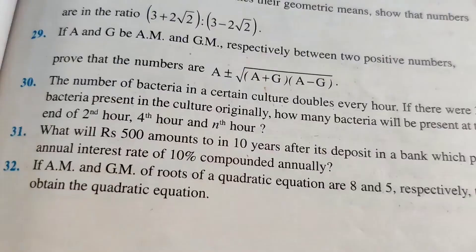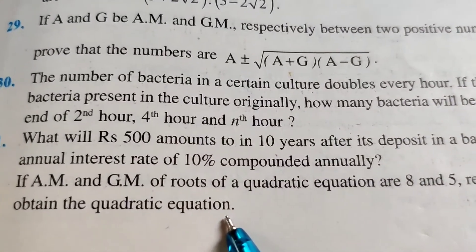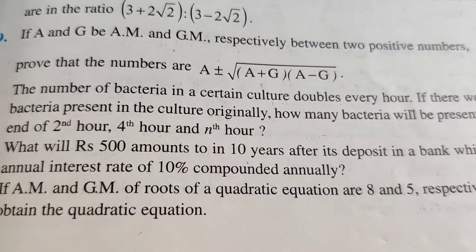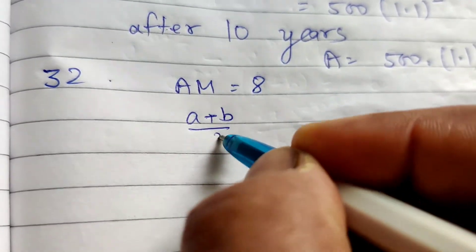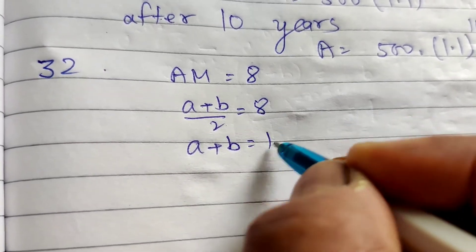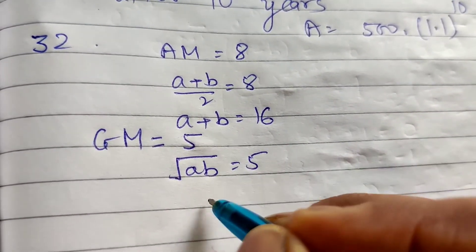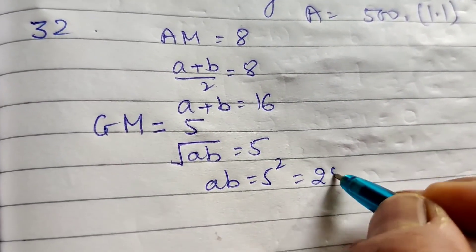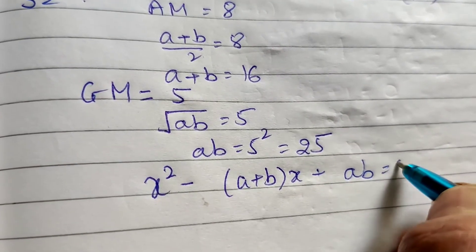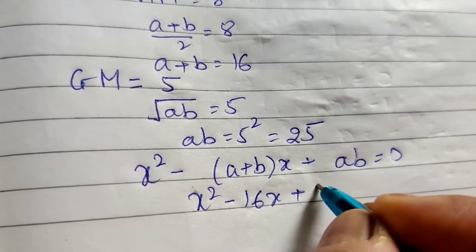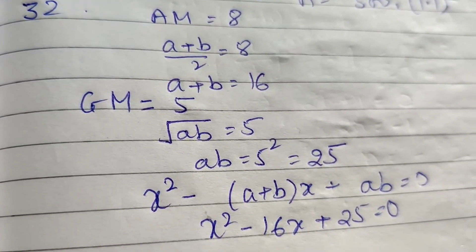Question number 32: If AM and GM of roots of a quadratic equation are 8 and 5 respectively, obtain the quadratic equation. Given arithmetic mean = 8, so (a + b)/2 = 8, meaning a + b = 16. Geometric mean = 5, so root(ab) = 5 and ab = 25. The quadratic equation is x² - (sum of roots)x + (product of roots) = 0, giving x² - 16x + 25 = 0.